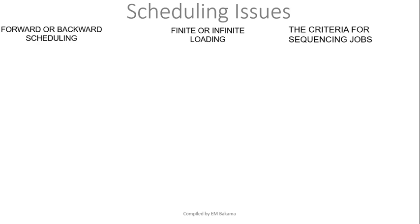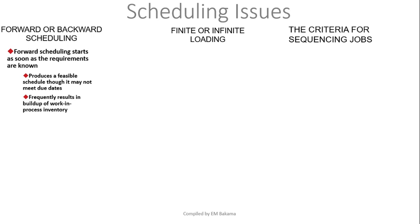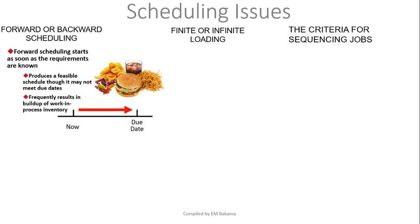As far as forward and backward scheduling is concerned, forward scheduling starts as soon as the requirements are known. We get the customer to tell us what they want, then we start the job and work forward to the due date. Generally, this is what happens in most companies. Take the example of a restaurant — they don't cook the food before you come. You come, you tell them what you want, they start cooking, and they give it to you maybe in the next five to ten minutes. So they work with forward scheduling.